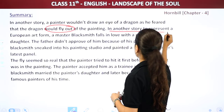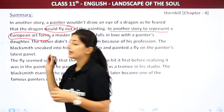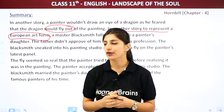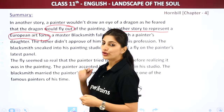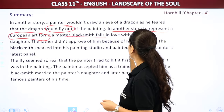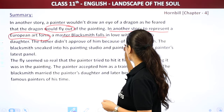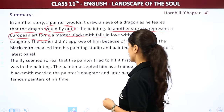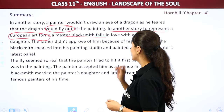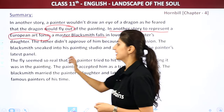In another story, to represent the European art form, there was a master blacksmith who fell in love with a painter's daughter. The father didn't approve of him because of his profession. The blacksmith sneaked into his painting studio and painted a fly on the painter's latest panel.